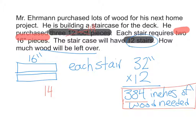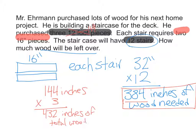So I can take my 144 inches and multiply that by 3 to get 432 inches of total wood. And now I just need to find out how much will be left over. So I take my total and subtract it from the amount that we are using.